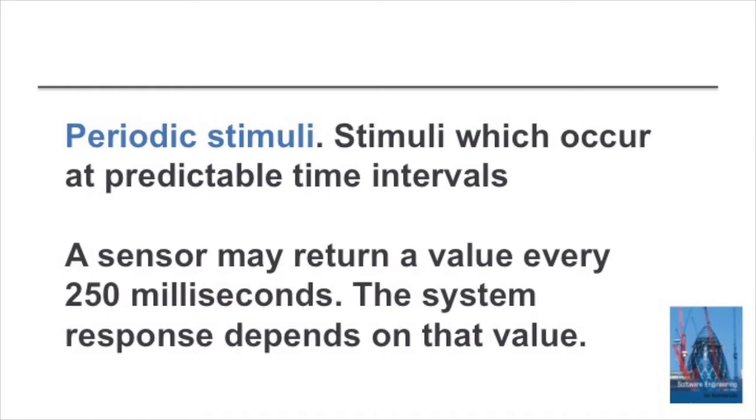Periodic stimuli are stimuli that occur at known and regular intervals. So we may set up a system to measure temperature three or four times per second and we get a stimulus from the temperature sensor at that rate.